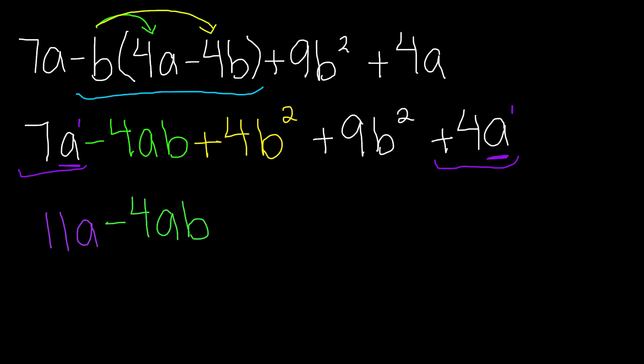Now, the other two like terms are positive 4b to the second power and positive 9b to the second power. Positive 4 and positive 9 make positive 13b to the second power. This is the simplified form of this expression.